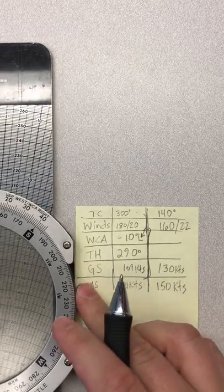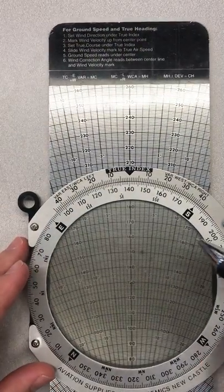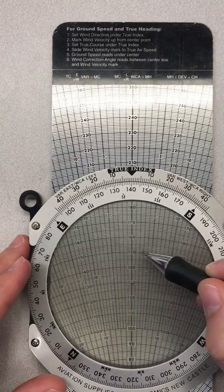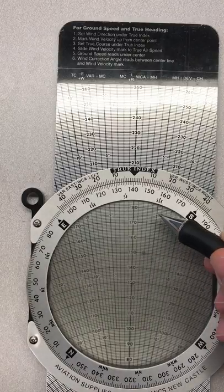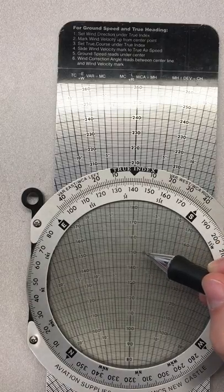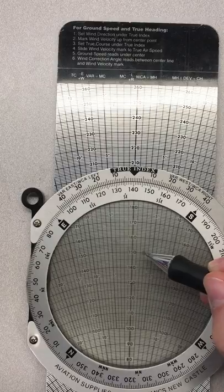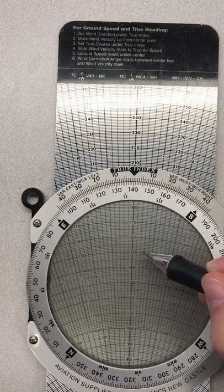And what about our wind correction and heading? You see it's only a few degrees, but for the wind correction angle, it's right of center here. So we're gonna add, and here's our five degrees. So that looks to be about three degrees right. So that's plus three right for a wind correction angle.